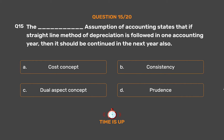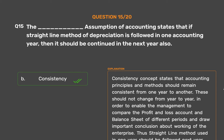The correct answer is Option B: Consistency. The Consistency Concept states that accounting principles and methods should remain consistent from one year to another and should not change from year to year, in order to enable management to compare the profit and loss account and balance sheet of different periods. Thus the straight-line method used in one year should be followed in the next year also.